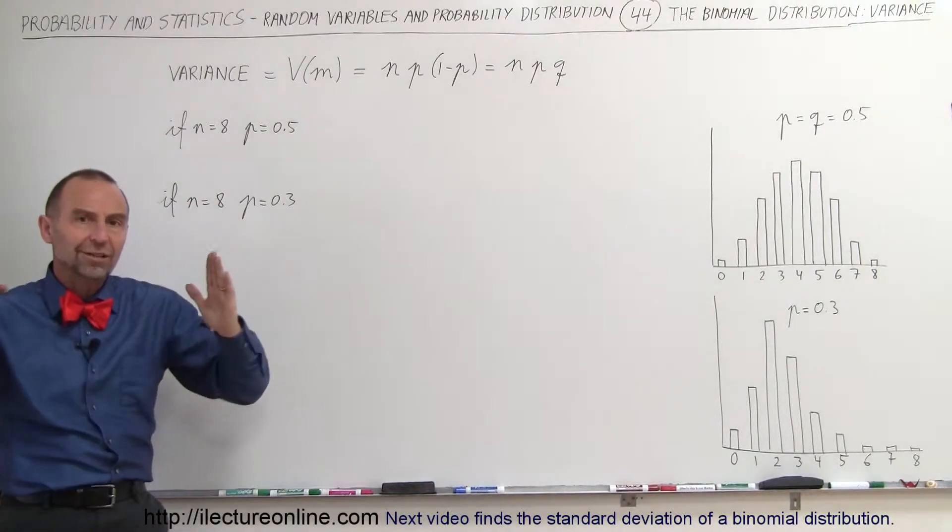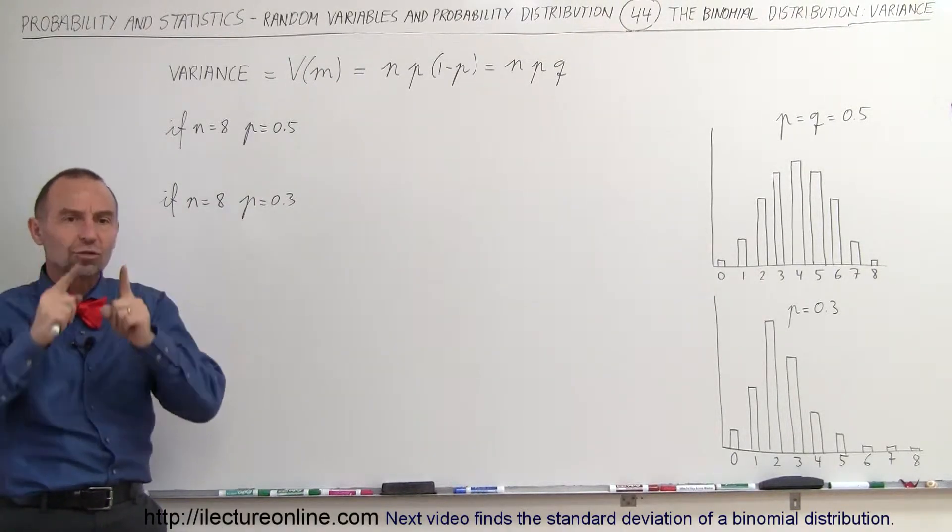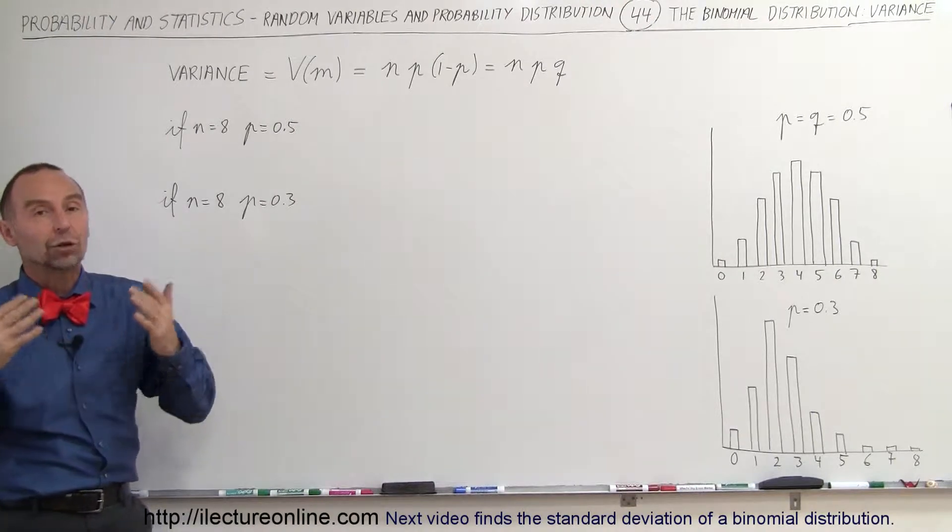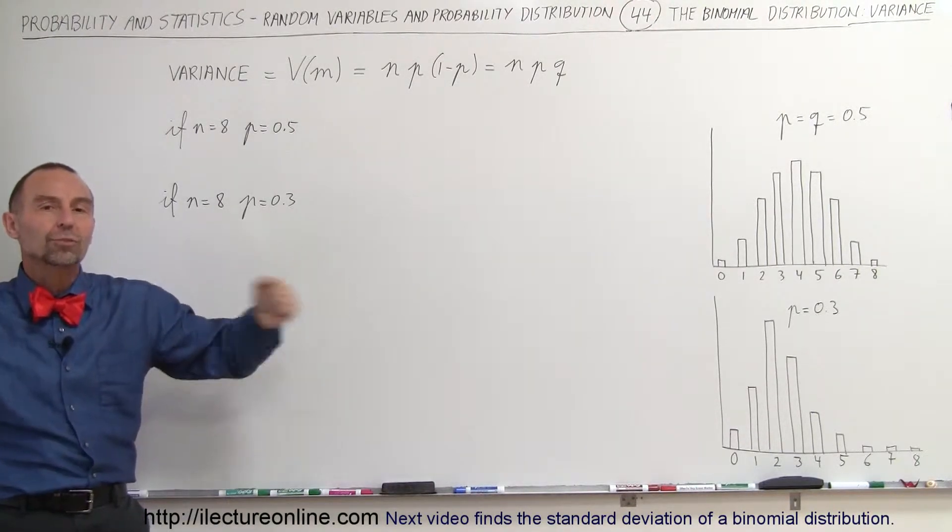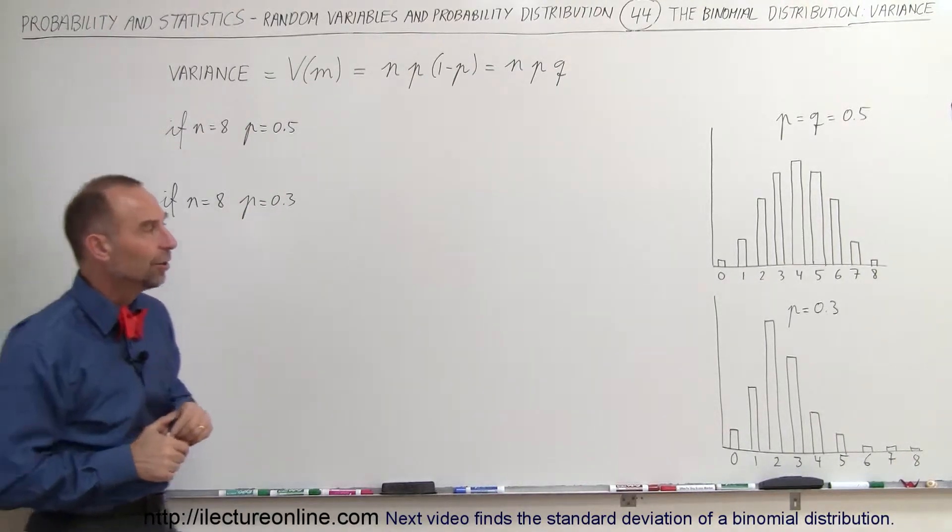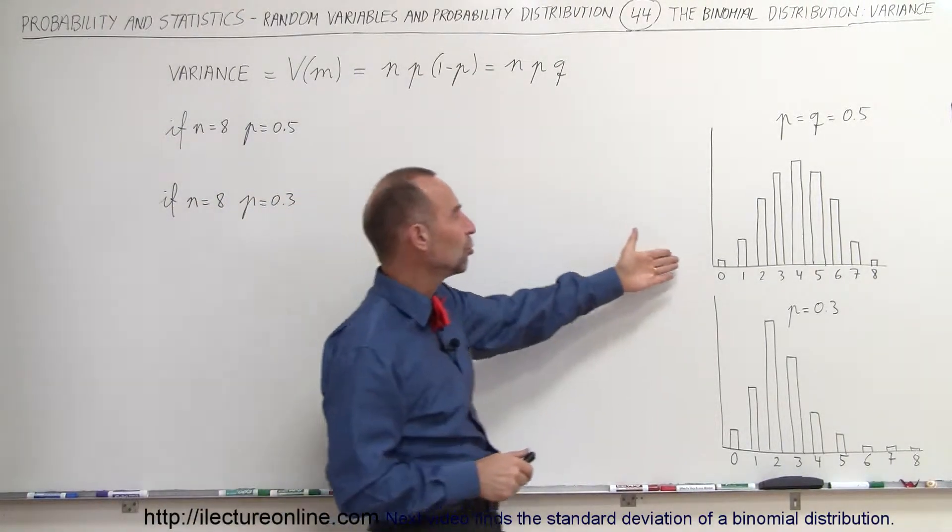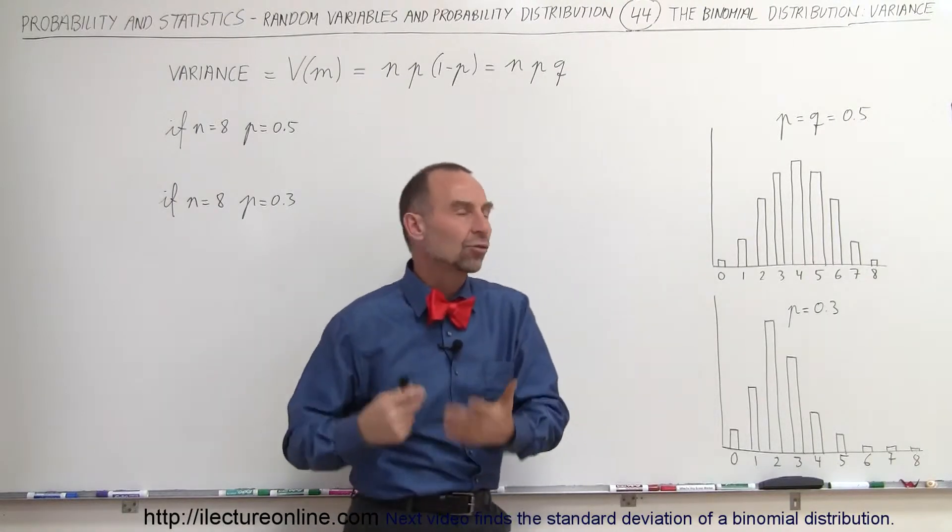For small variance, they're very tightly packed together and the distribution is very narrow. For large variance, the distribution is much wider and the values are much farther spread apart. In the two cases we have here, we have a binomial distribution where n equals 8, so we have 8 trials.